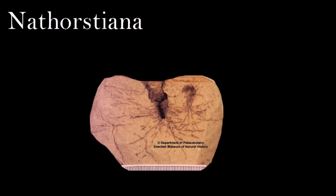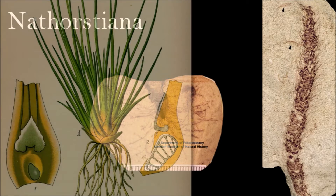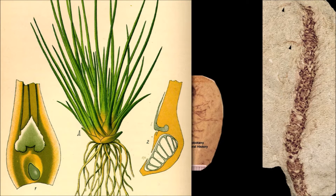The fossil plant Nathorstiana is known only as a collection of molds and casts taken from a single location in Germany. Its root-bearing base grew downward, producing new roots and shedding older ones as it went. The root-growing tip was sunk in a central depression and covered with a membrane for protection. The radially symmetrical shape of the young bases divided into two and then four lobes as the plant matured — this maturation indicates age, not the very variable size shown by the fossils.